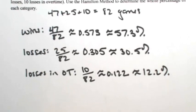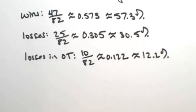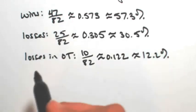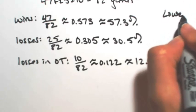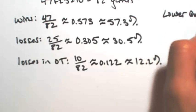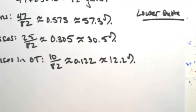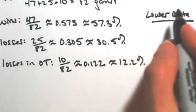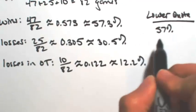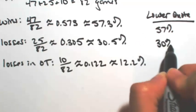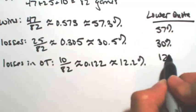So the Hamilton method, the first thing happens is that we assign the lower quota to each group. So for the Hamilton method, we're going to do lower quota. So in other words, just round down. So for wins, we're going to do 57%. Losses are going to be 30%. And losses in overtime will be 12%.